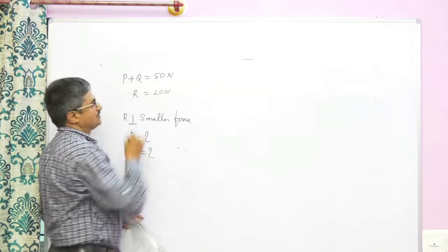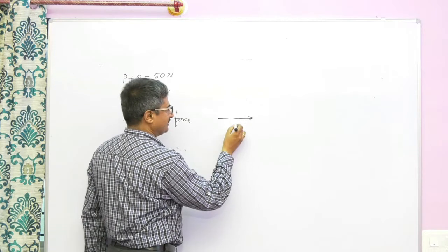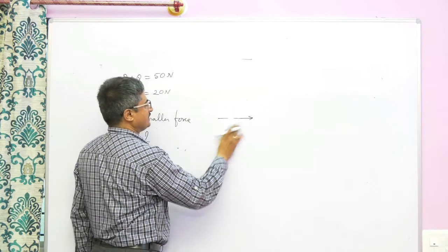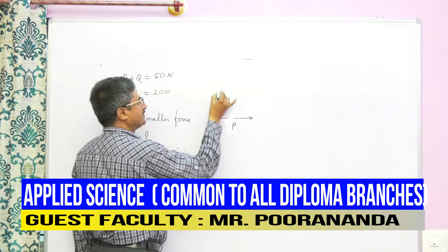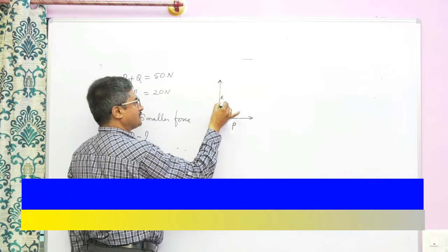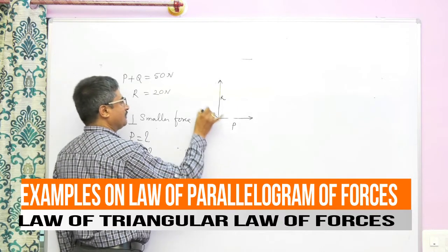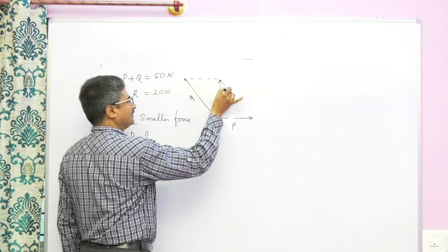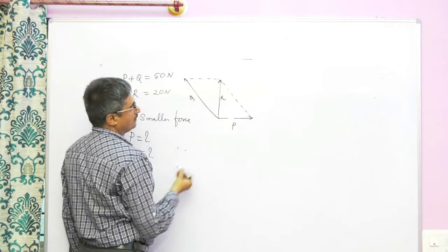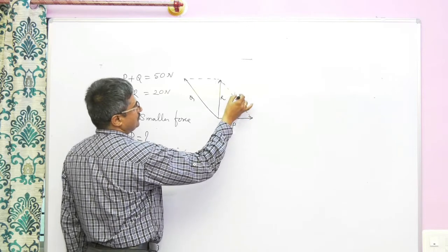Now, p plus q is 50 Newton. In the right angle, you can see this is the resultant. This is vector p, this is smaller force. The resultant is perpendicular to smaller force. It happens only if q is like this. This is q, this is p, this is r, so this is also q.